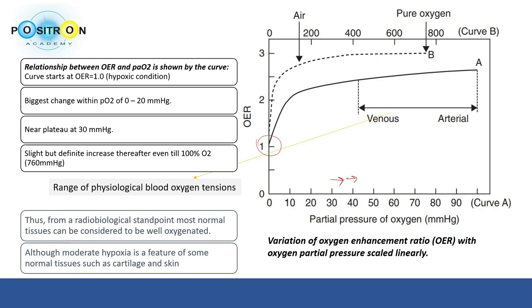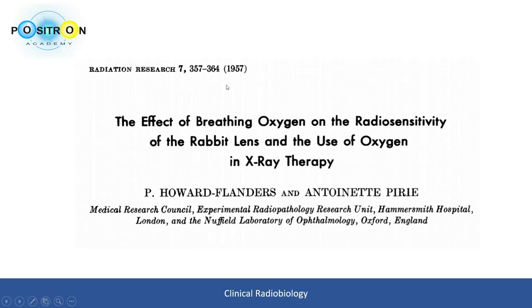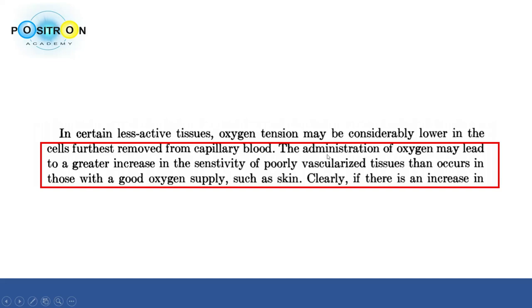An early landmark paper by P. Hovard Flanders examined the effect of breathing oxygen on the radiosensitivity of rabbit glands and the use of oxygen in x-ray therapy. A key finding was that any part of a tumor poorly supplied with oxygen will be partially protected from the radiation used in treatment — hypoxic tumor regions are radioresistant. The paper also noted that administering oxygen may lead to a greater increase in sensitivity of poorly vascularized tissue compared to well-supplied tissue like skin.